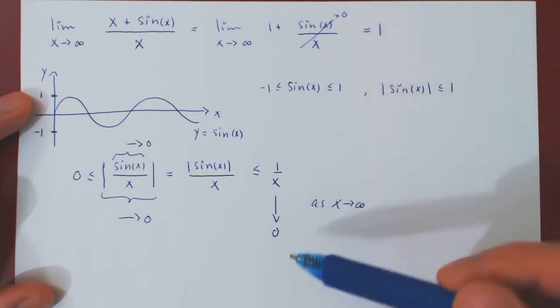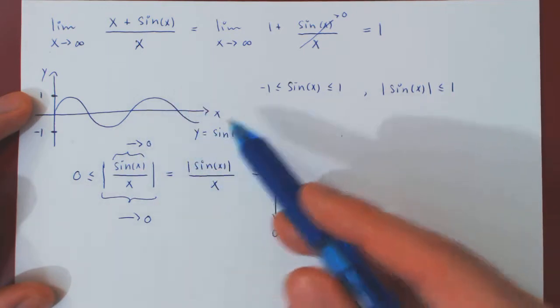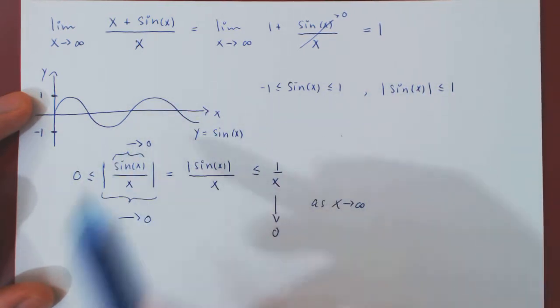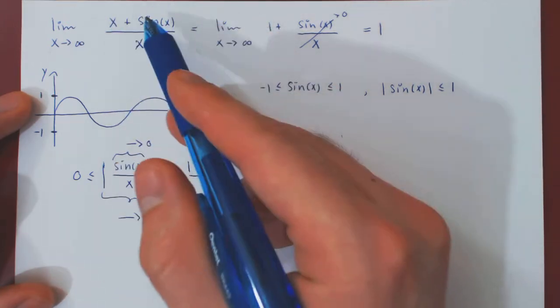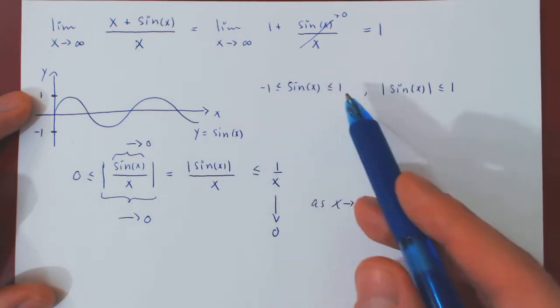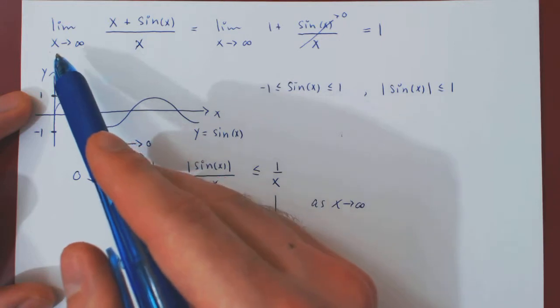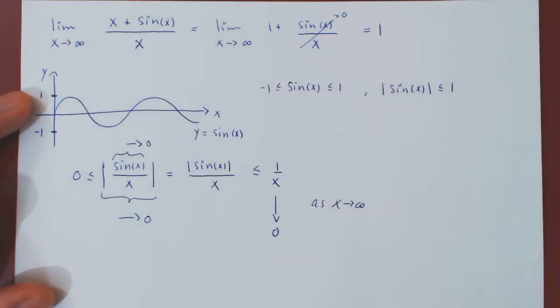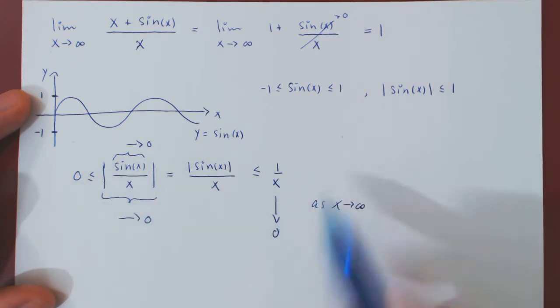So, you see, a very short solution using our intuition of the sine function being between negative 1 and 1. And a very short and nice application of the squeeze theorem. Well, let's look at this limit now. And, again, as x tends to infinity and sine of x is always between negative 1 and 1, x plus sine of x will also go to infinity. So, we have here an infinity over infinity case. Let's see what happens if we had tried to use L'Hopital's rule instead of our very short and elegant solution using the squeeze theorem.